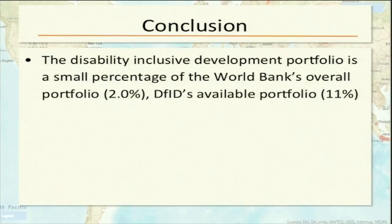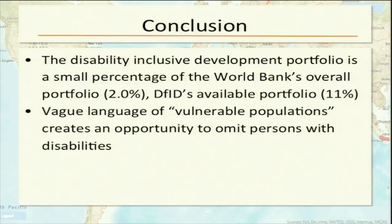Key takeaways: World Bank's active project portfolio showed only 2% included people with disabilities. DFID's publicly available portfolio showed 11% — important to note this is only publicly available data. If a project only mentioned 'vulnerable populations' without specifically naming persons with disabilities, it was a strong indicator that disability was not ultimately included — vague definitions allowed projects to move forward without any disability-specific outcome measures or mentions.